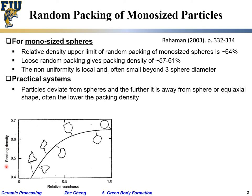Here we are plotting relative packing density versus relative randomness. A value of one means a perfect sphere, and even for a perfect sphere with random packing, the highest you can get is roughly 64%, not 74%. As we deviate away from a perfect sphere, the trend goes lower and lower — naturally, because more friction means less ability to flow and find a nice place.